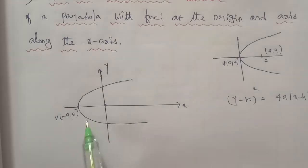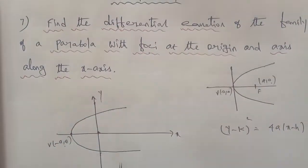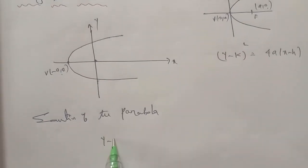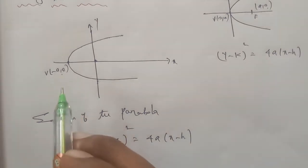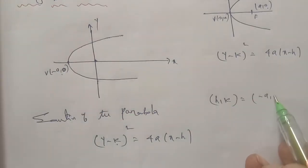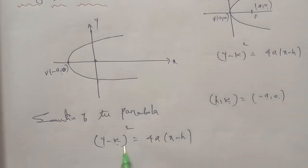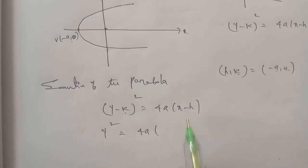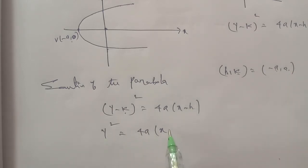To find the equation of the parabola, we substitute the vertex (h, k) equals (minus a, 0) into the general equation (y minus k) squared equals 4a(x minus h). So h equals minus a and k equals 0, giving us y squared equals 4a into (x plus a). This is our equation.